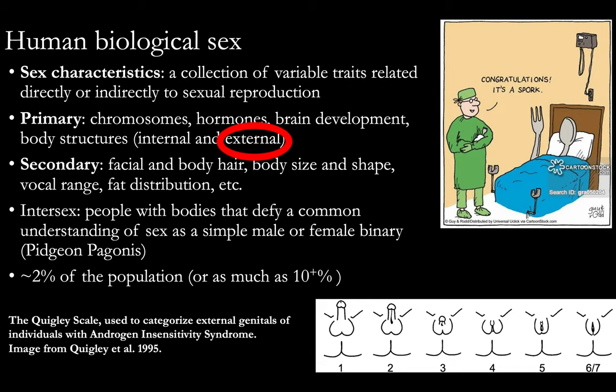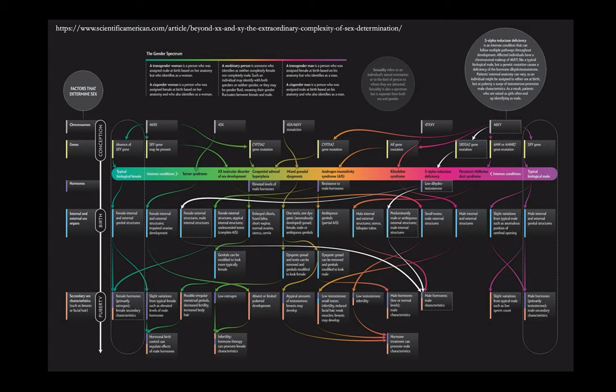It's not just genitals that vary this way — every aspect of human biological sex variation varies along a spectrum and interacts with other sex traits, as shown in this infographic from Scientific American that illustrates a variety of ways that human sex can vary and some of the conditions that result from that.